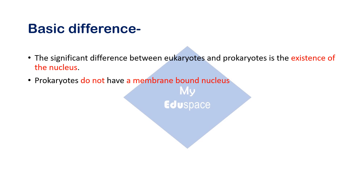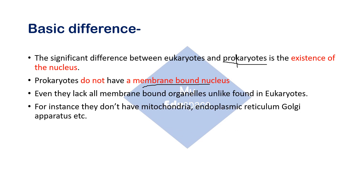The name suggests that 'prokaryote' is made up of two words: 'pro,' meaning primitive or old, and 'karyon,' meaning nucleus. Hence, a very old and primitive type of nucleus is present in prokaryotic cells, which is not a membrane-bound nucleus. There is no well-defined membrane surrounding the chromosome or genetic material DNA. The significant difference between eukaryotes and prokaryotes is the existence of a nucleus — prokaryotes do not have a membrane-bound nucleus.